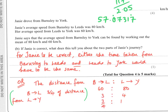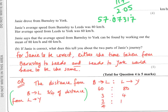For part B, Janie's average speed from Barnsley to Leeds was 80 kilometres an hour, and her average speed from Leeds to York was 60 kilometres an hour. For her assumption that you can just average those two speeds to find the overall average speed, either the time taken from Barnsley to Leeds and Leeds to York would have to be exactly the same, or the distance from Barnsley to Leeds compared to Leeds to York would have to be in the ratio of 60 to 80, which boils down to three quarters to one.